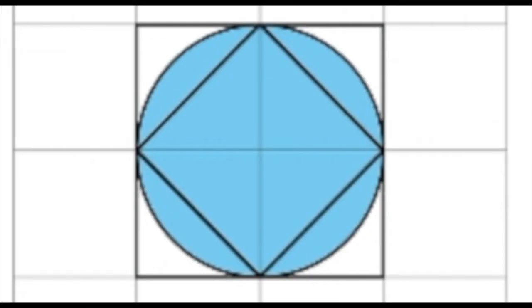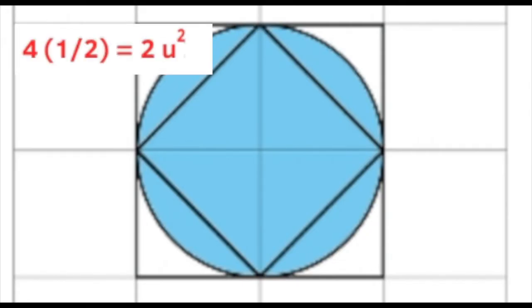Now let's look at the area of the smaller square inside the circle. This smaller square is made up of four small triangles. Each of those four small triangles is one half of a square unit, so four halves equals two — this smaller square has an area of two square units. That means the area of the circle is larger than two square units but smaller than four square units.